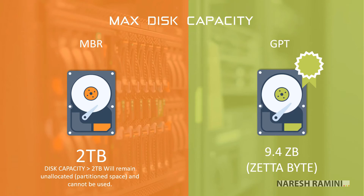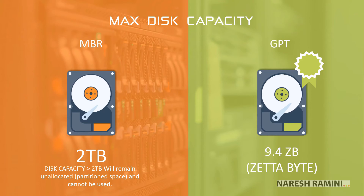Regarding maximum hard drive capacity, MBR can only work with a maximum hard drive capacity of 2TB. Disk capacity greater than 2TB will remain unallocated and cannot be used. If you bought a 3TB hard disk, only the first 2TB can be put into use on MBR drives — the remaining 1TB remains unallocated and cannot be used. GPT can support hard drive capacity of 9.4 ZB.